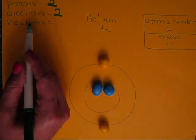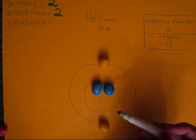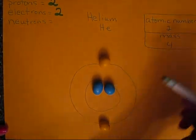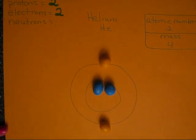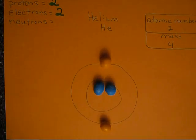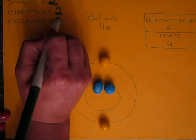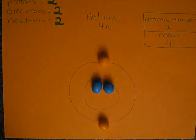The neutrons will be the 2 protons plus a number that equals 4. So 2 plus 2 equals 4, meaning the neutrons are also 2.